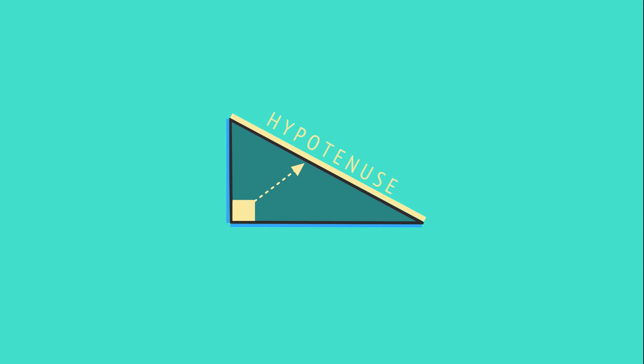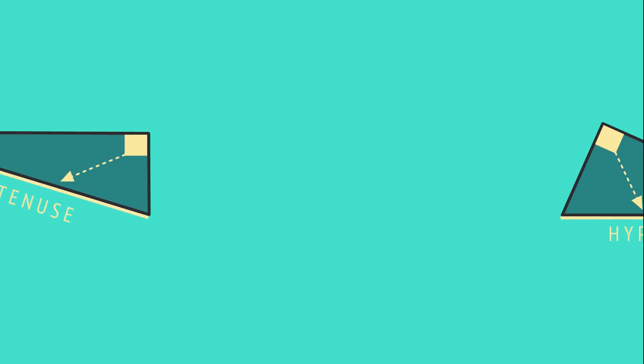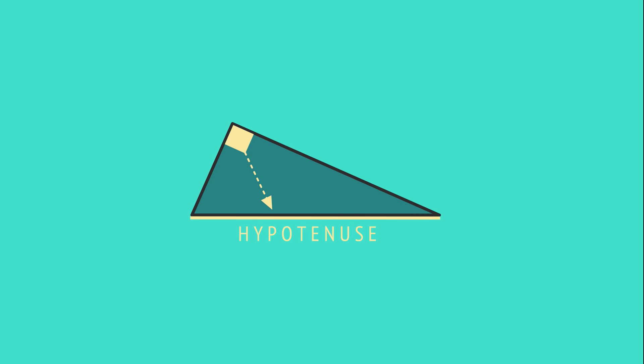The third side, directly opposite the right angle, is the longest side, called the hypotenuse. And any right-angled triangle, in any orientation, will always have its longest side opposite the right angle.